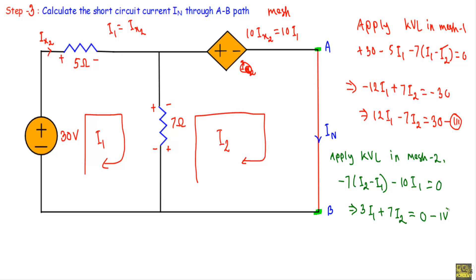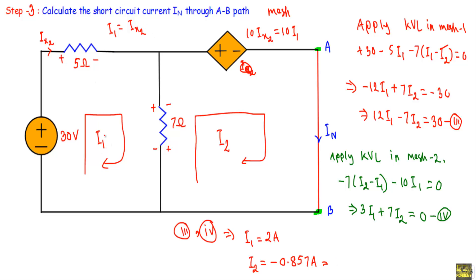Solving equations 3 and 4 simultaneously gives I1 = 2 amperes and I2 = −0.857 amperes. In this circuit, I2 is the loop current flowing through the short circuit path from A to B, which represents the Norton current In. Therefore In = −0.857 amperes.